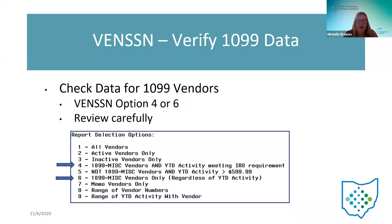Another report, other than just the F 1099 report, is the Vend SSN report. This is a classic report we've had out there for years. In this report, they can specify if they want just 1099 vendors. It's going to pull all of those 1099 vendors — both miscellaneous and NEC. They can choose option four, and it will create a report of those 1099 vendors with their year-to-date activity meeting the IRS requirement of $600 or more. Option six will pull all 1099 vendors regardless of year-to-date activity.